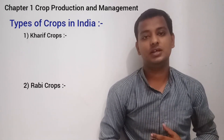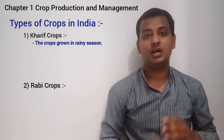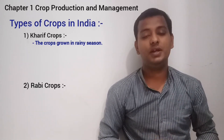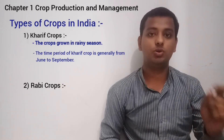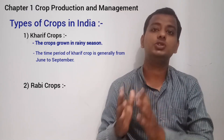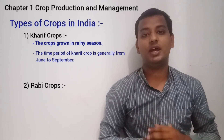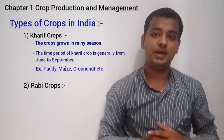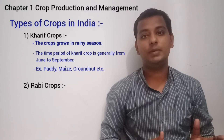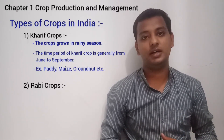These two categories are Kharif crops and Rabi crops. Kharif crops are basically the crops which are grown in the rainy season. The time period is June to September. Examples of Kharif crops are paddy, maize, soybean, groundnut, etc.